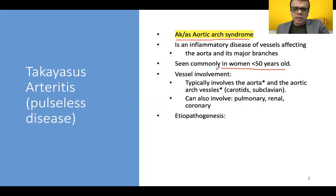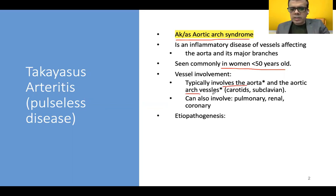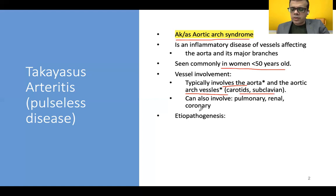By definition, we usually limit the age group to less than 50 years of age. The vessel involvement includes the aorta and the aortic arch vessels — the carotid, subclavian, and brachiocephalic — which are most commonly involved. It can also involve pulmonary, renal, and coronary arteries as well.